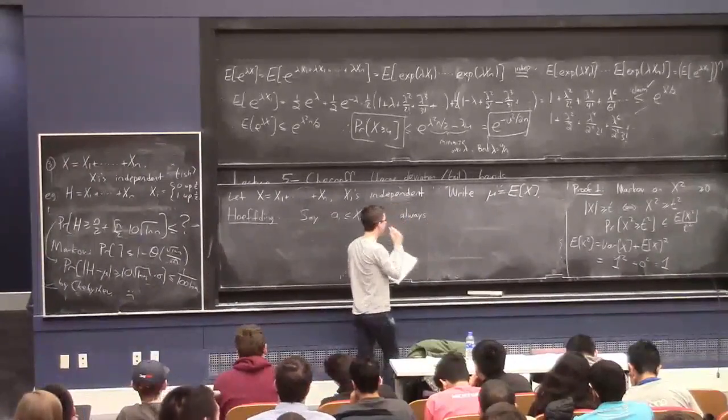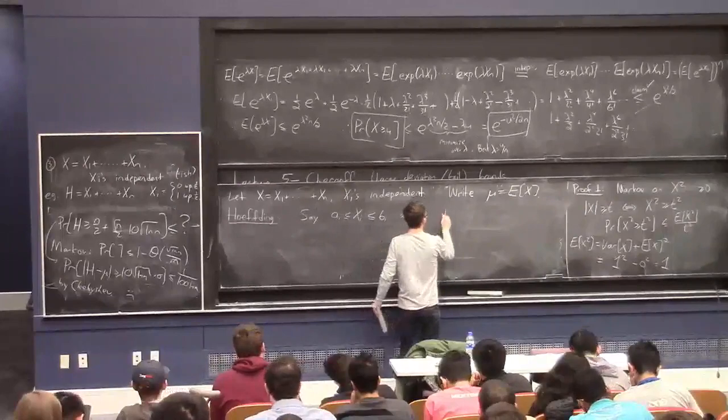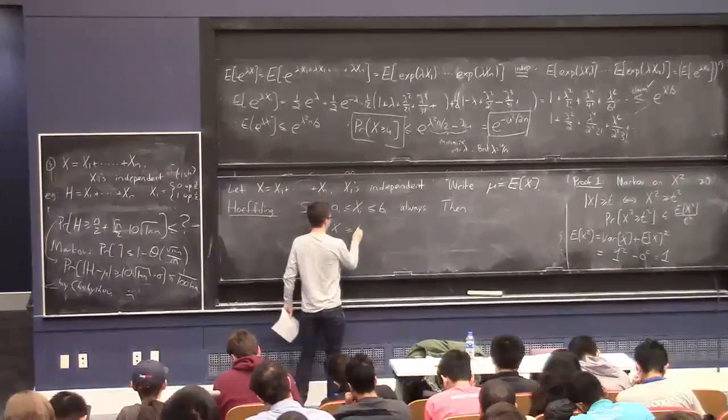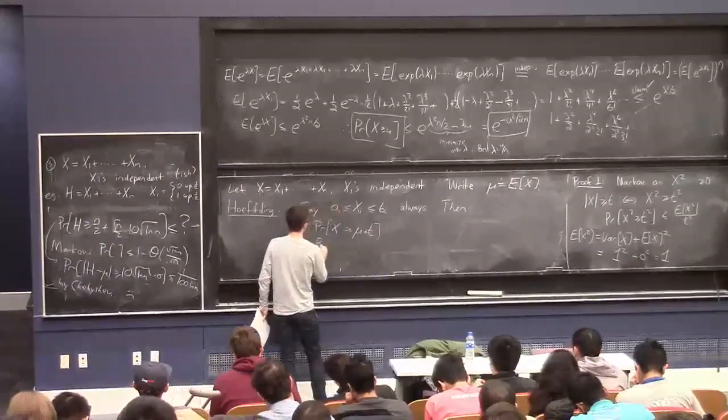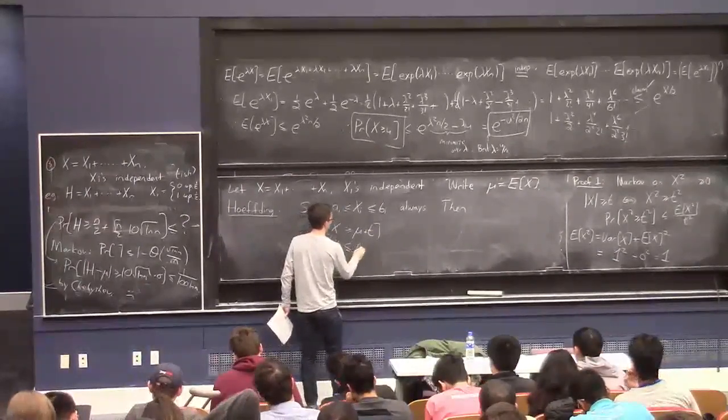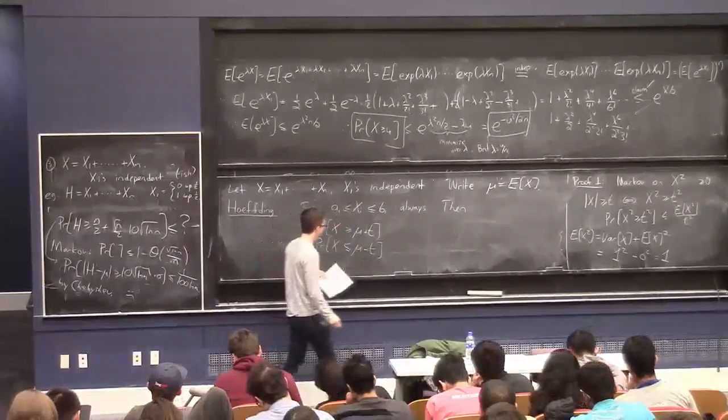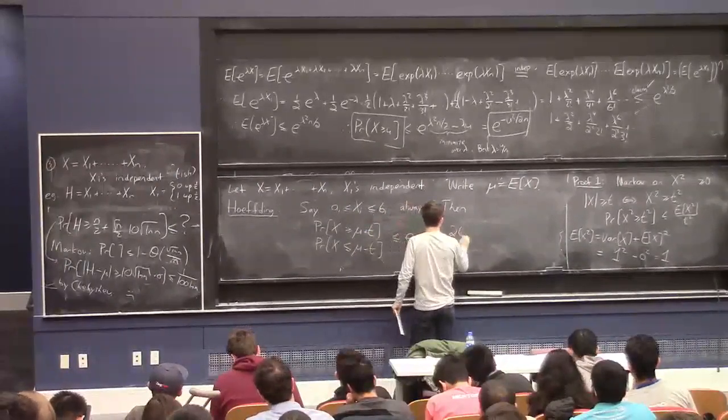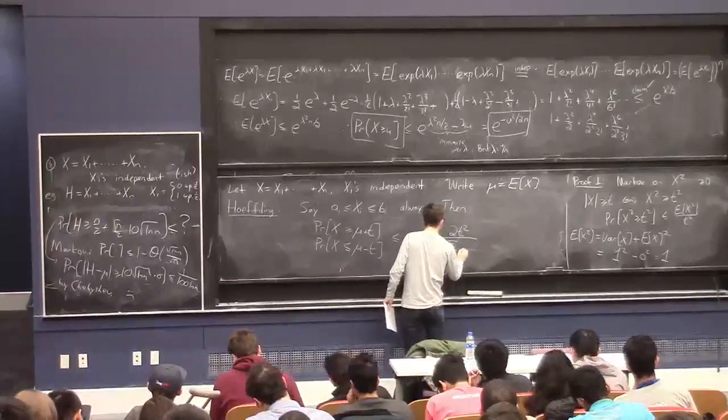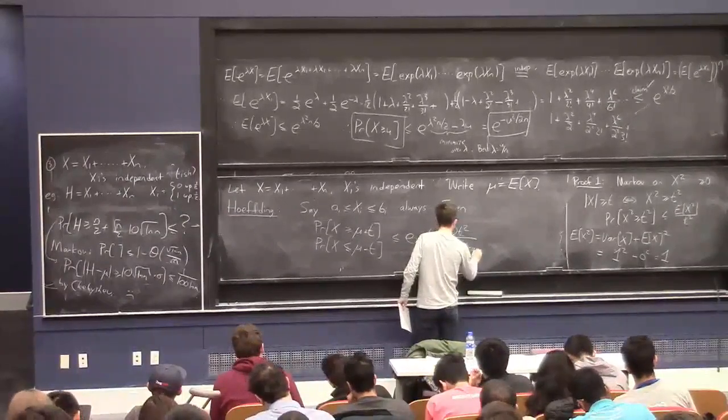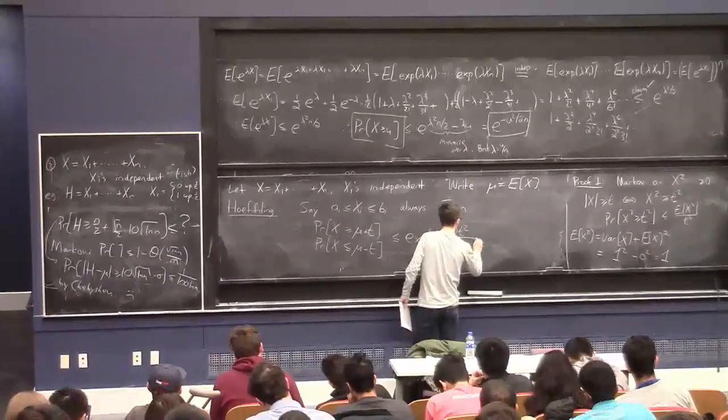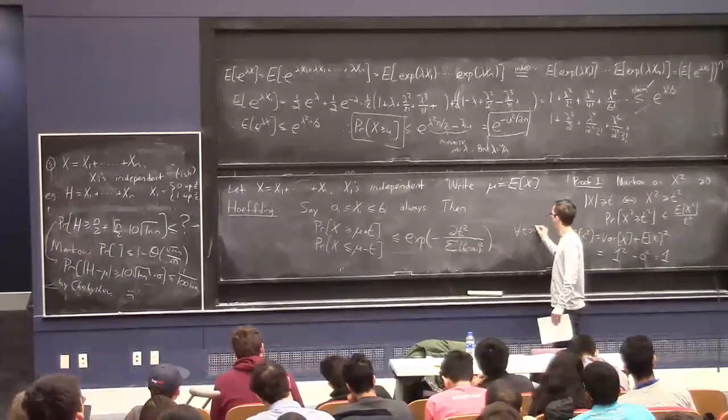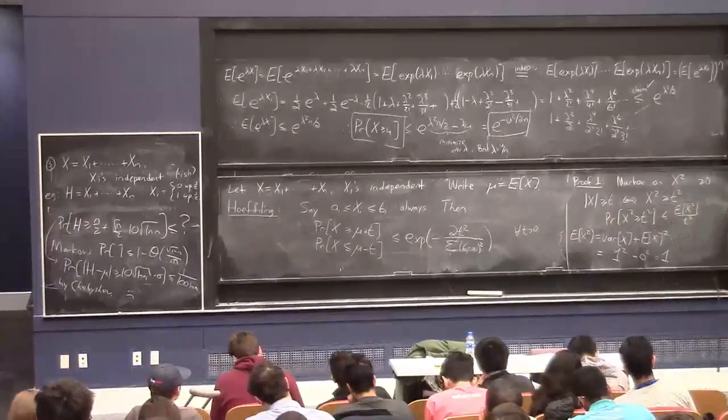So then Hoeffding says the following. Then, the probability that X, the sum, is bigger than its mean by T, or the probability that X is less than its mean by an additive negative T, these are both bounded by the same thing. And the same thing is E to the minus 2 T squared over the sum of the BI minus AI squareds. For all T greater than zero. And this one's pretty powerful, and you can use it in a lot of situations.